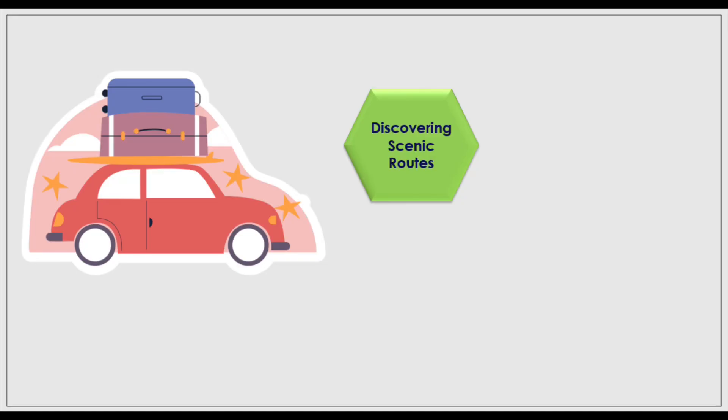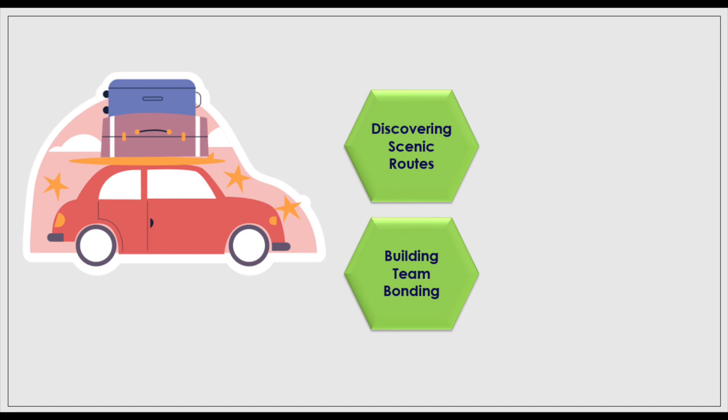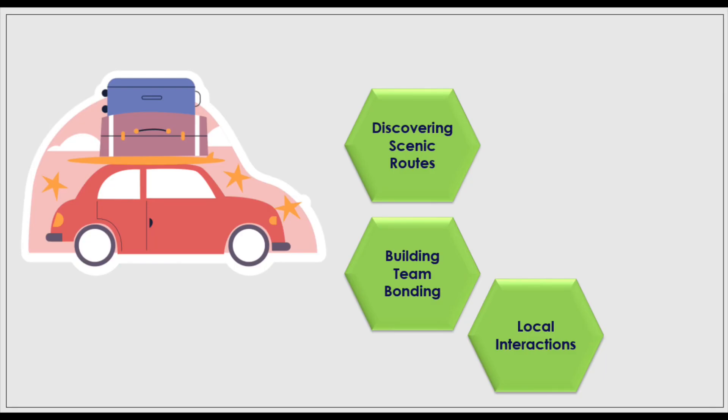Let's consider the road trip example and think about positive and negative risks. For positive risk: the risk of getting lost might lead to discovering beautiful scenic routes not originally planned. A flat tire or GPS malfunction might create an opportunity for the group to work together, fostering team bonding through problem-solving. And if navigation tools fail, it could lead to interacting with locals for directions, potentially resulting in cultural exchanges or discovering hidden local gems not on the original itinerary.